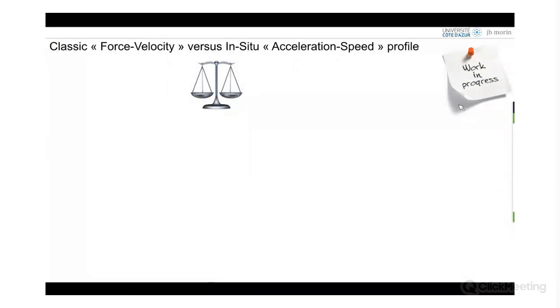Everybody has in mind the comparison: what are the similarities and differences between the classic force-velocity and the in-situ acceleration-speed profile? First, the force-velocity is a test. You need one linear sprint, so we could say it's semi-specific. It is not football, but it is sprinting. The in-situ just needs football data, good GPS data.